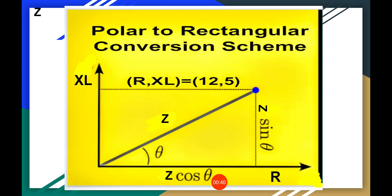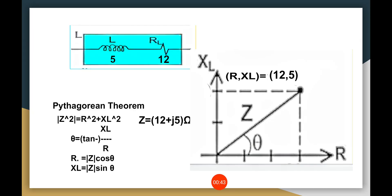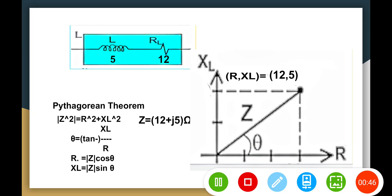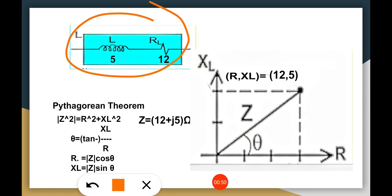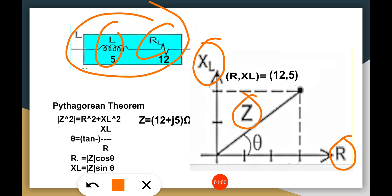We have here a sample inductor. It has a reactance and resistance. In the graph you have the reactance axis and the resistance, and also the impedance. If you are going to find the polar coordinates from this point up to this point, this is the total impedance of this sample inductor — the maximum opposing resistance to current.